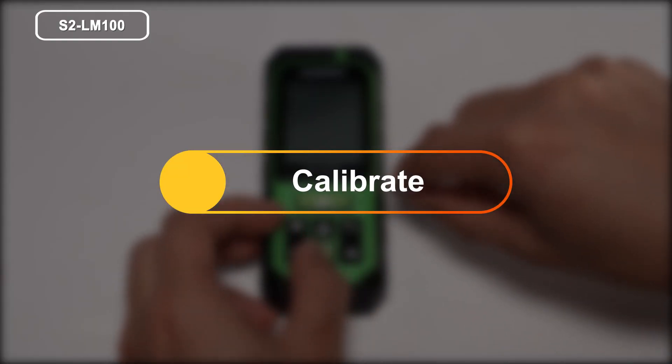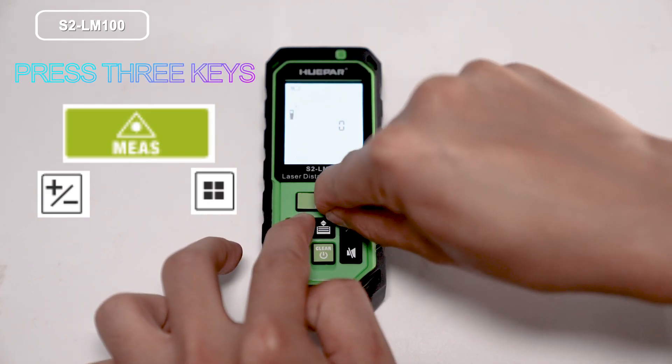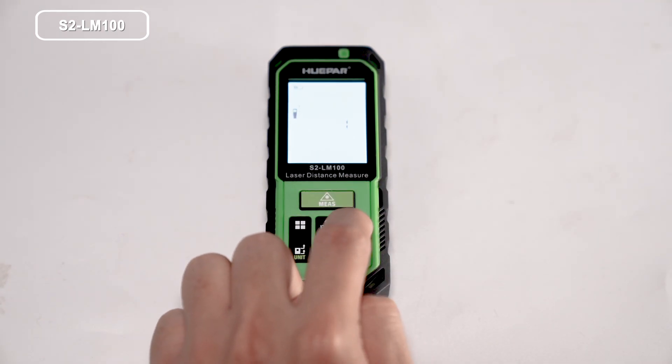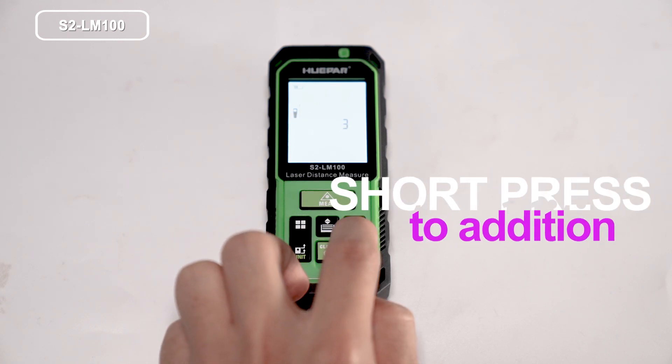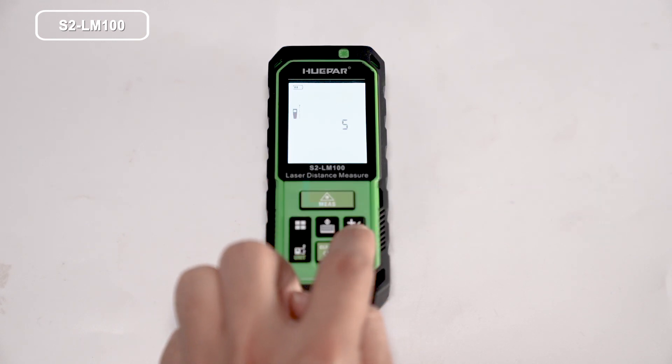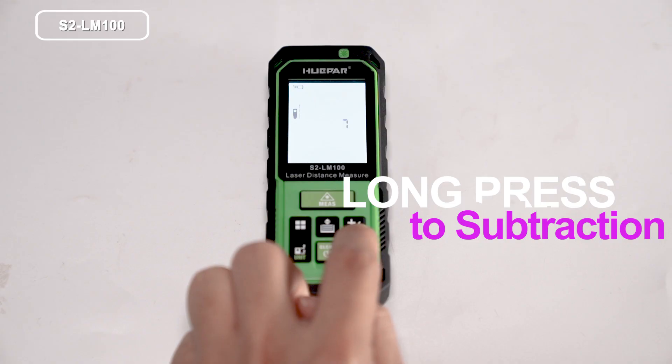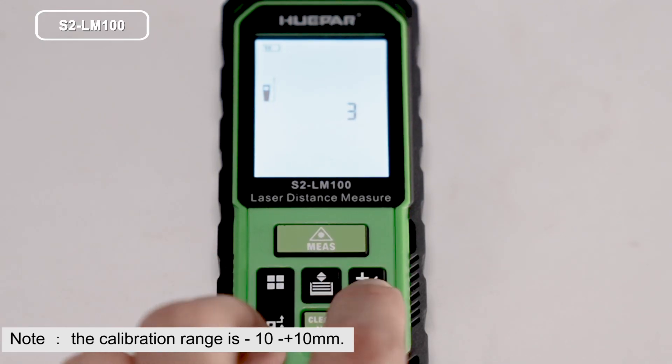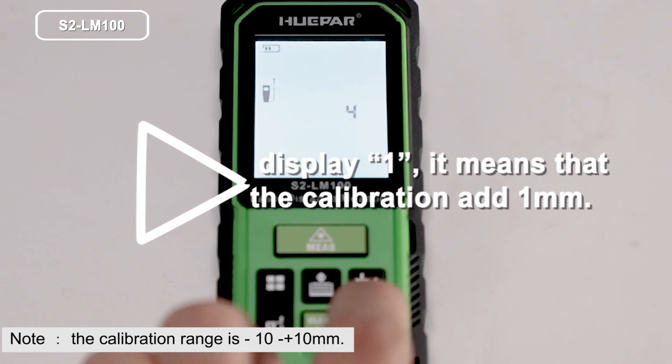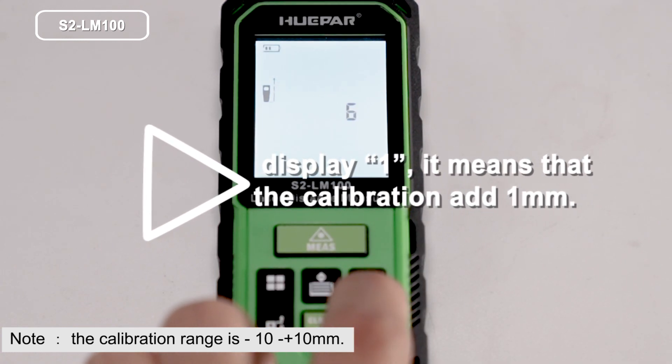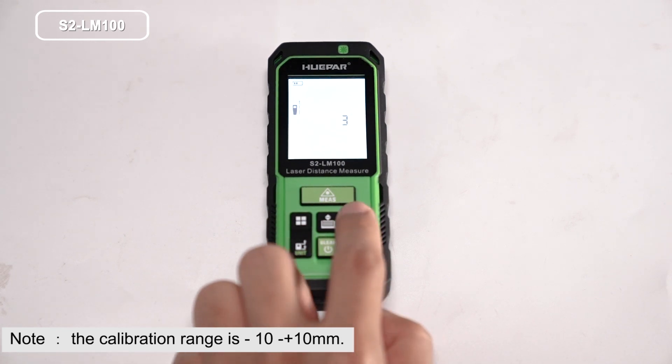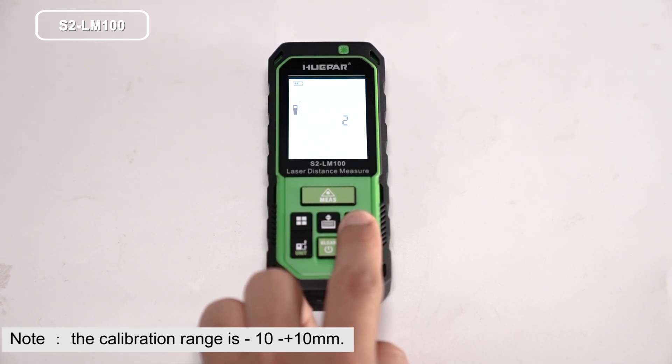Calibrate. Turn on the tool. Quickly press 3 keys as shown below at the same time to calibrate interface. Short press the bottom to addition. Long press the bottom to subtraction. For example, if 0 is displayed, short press the bottom one time to display 1. It means that the calibration add 1 mm. After calibration, press the bottom to save it and the tool will automatically turn off.